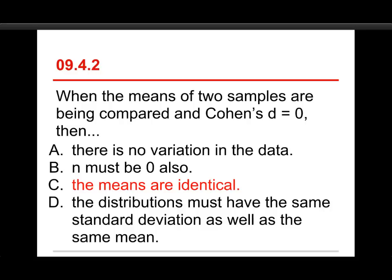Now, let's take a look at the others. In A, there's no variation in the data—you would think Cohen's d would be zero, but the denominator would be zero also, and you can't divide by zero, so actually Cohen's d would be undefined in that situation. N must be zero? No, you couldn't get any scores at all if you didn't have anybody in it. And the distributions must have the same standard deviation? No. They would have the same mean, but don't have to have the same standard deviation, because it's the numerator here that we're concerned about.